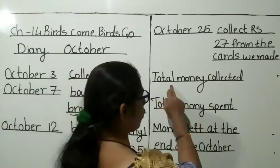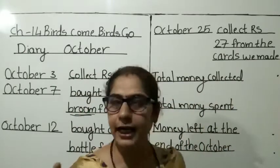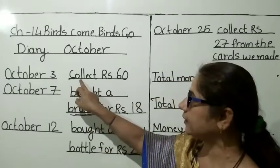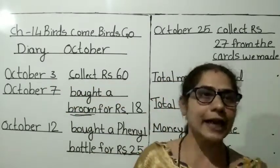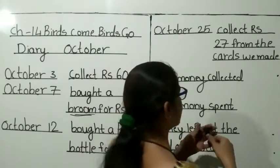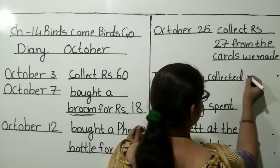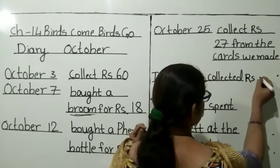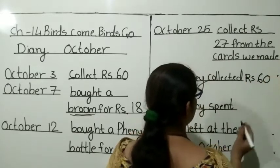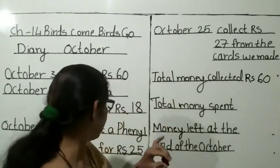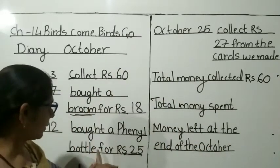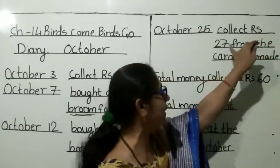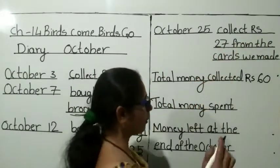First, here, total money collected. Collected means — just you see here — collected kya likha hua hai? Collected rupees 60. Okay, right here, rupees 60. Here, what you have to write, student? Rupees 60. Then, next collected kya hai? Collected rupees 27. Rupees 27.